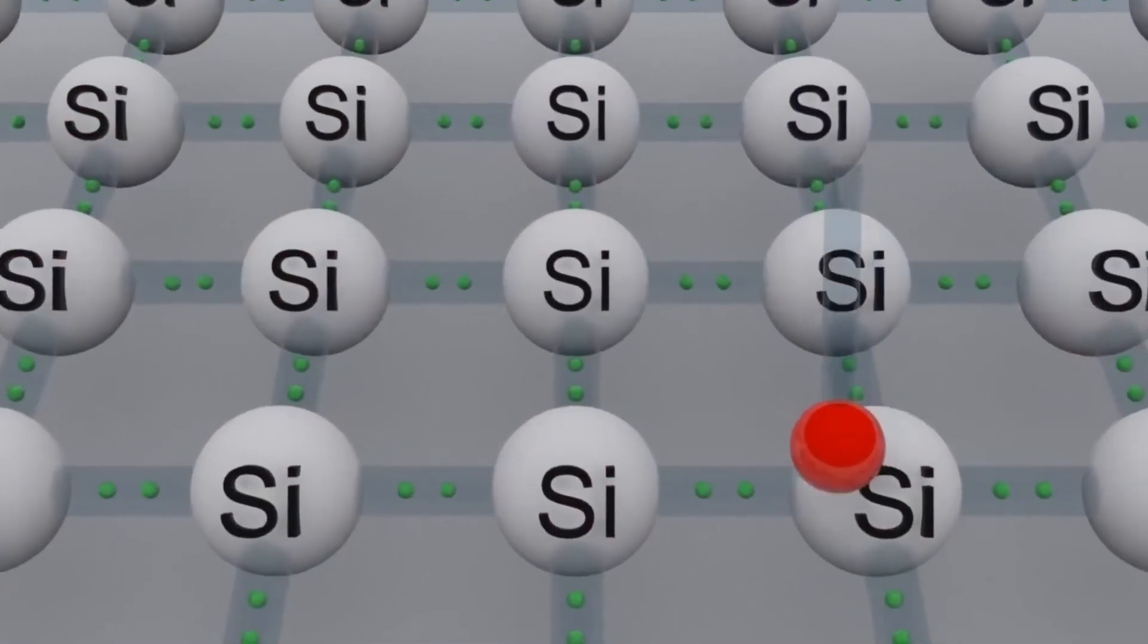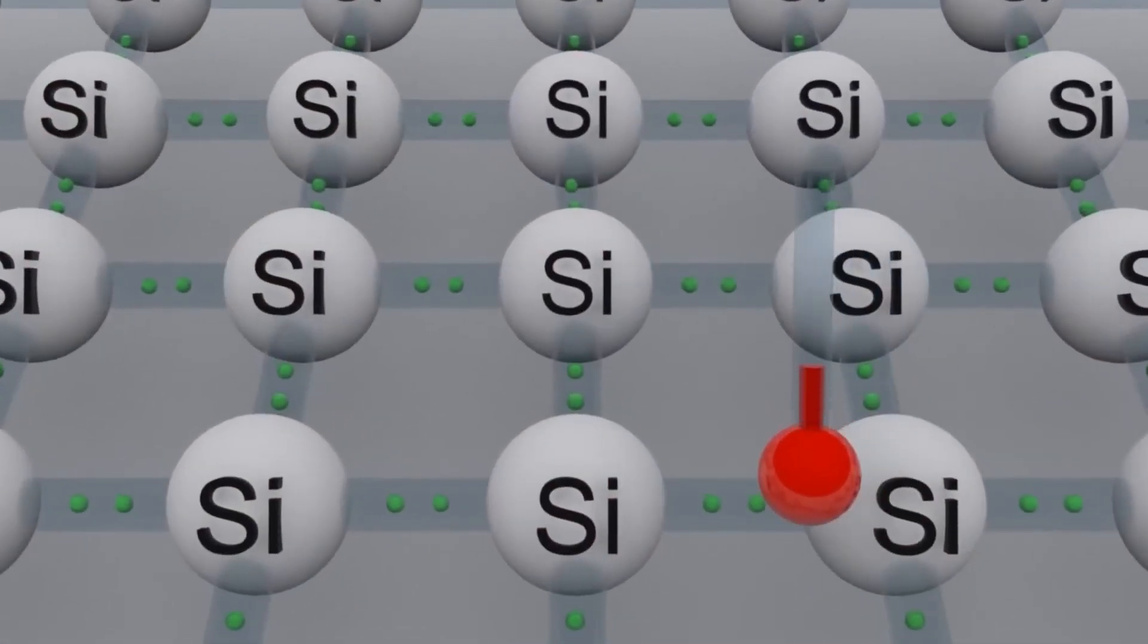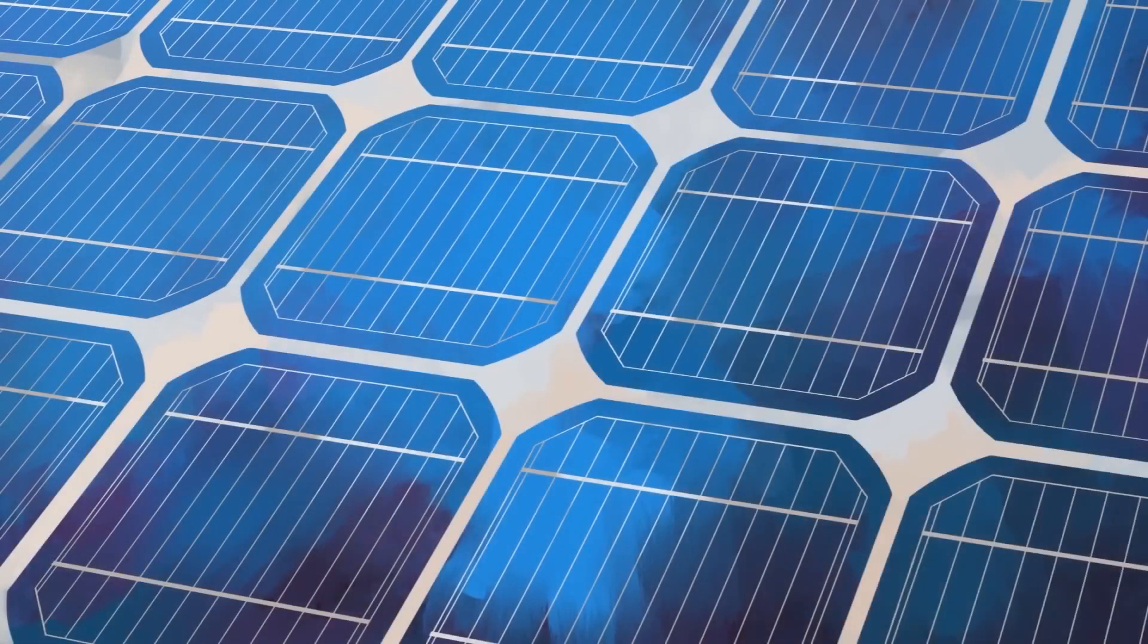The fact that silicon can soak up visible light was another problem that the researchers had to deal with. Even though this is good for solar panels, it is not ideal for the waveguide side, where any light that is absorbed would make the signal weaker.